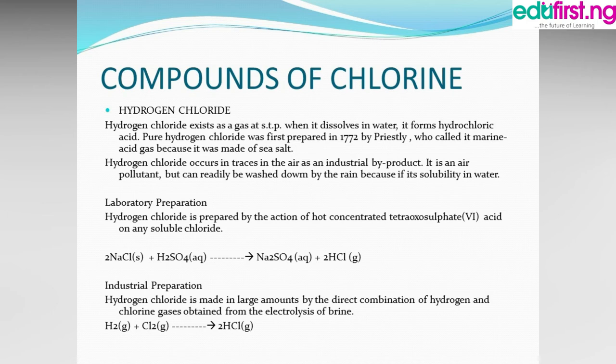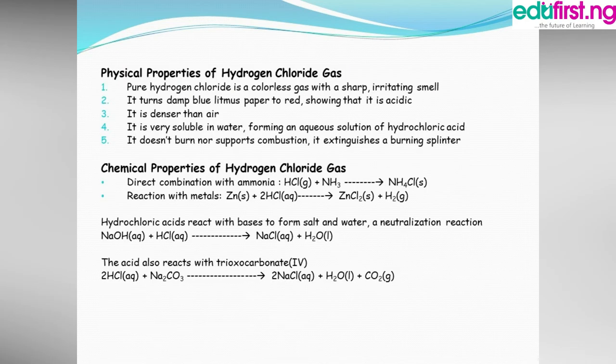Physical properties of hydrogen chloride: Pure hydrogen chloride is a colorless gas with a sharp, irritating smell. It turns damp blue litmus paper to red, showing that it is acidic. It is denser than air. It is very soluble in water, forming an aqueous solution of hydrochloric acid. It does not burn, nor does it support combustion.